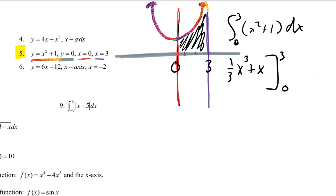Plug in 3 the first time. Plug in 0 the next time. Subtract those. And so, I think it should be about 12 square units.